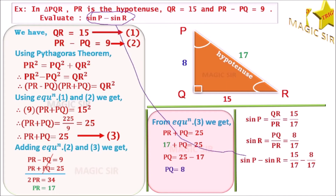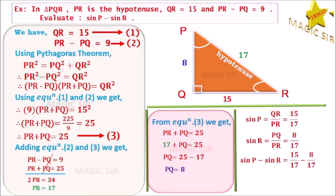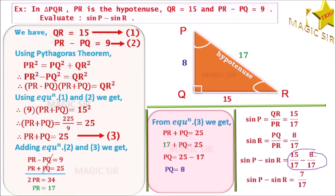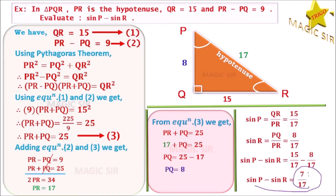Now we find sin P minus sin R. Sin P equal to 15 by 17 and sin R equal to 8 by 17. So sin P minus sin R equal to 15 by 17 minus 8 by 17. Both denominators are the same, that is 17, and 15 minus 8 equal to 7. Hence sin P minus sin R equal to 7 upon 17.